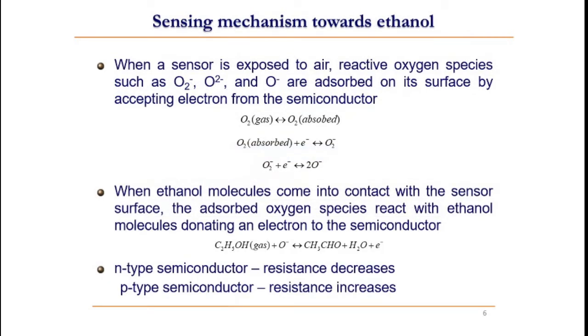Now, we can see about the sensing mechanism in a metal oxide semiconductor towards a gas, namely ethanol. When a sensor is exposed to air, what happens is that oxygen molecules in the atmosphere get absorbed on the sensor surface to form reactive oxygen species by accepting an electron from the semiconductor.